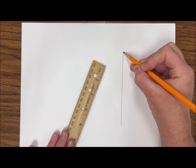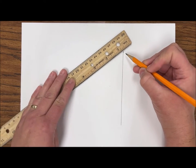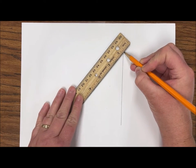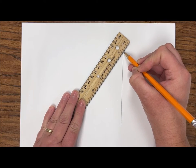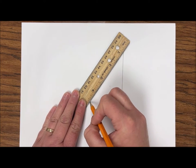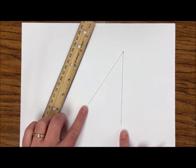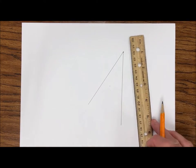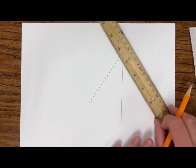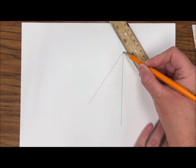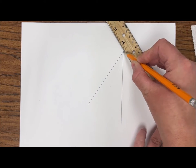Then from that same dot, we're going to use our ruler again and angle out, not too far, just a little space out on both sides. But we're going to make this line a little shorter than the middle line. So again, that middle line should be the longest and we're going to angle out from both sides, slightly shorter than the middle line.